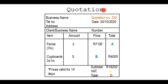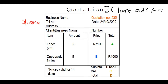In this video we will look at a quotation. A quotation is a document that businesses give clients when they ask for prices. In this document we see that there is a business name, a telephone number, address, an email address, and a quotation number. Each quotation given to a client is unique, and this is just to keep proof or evidence of what they said.